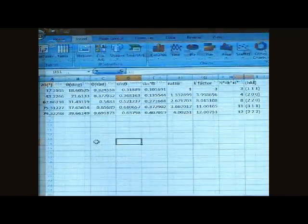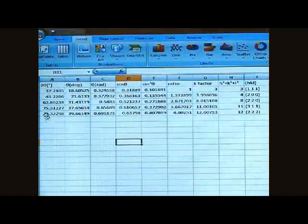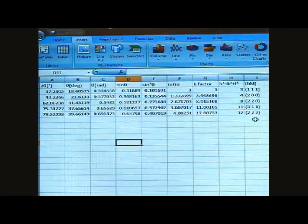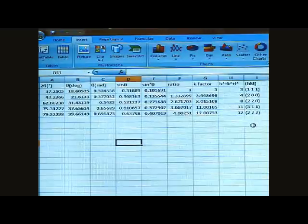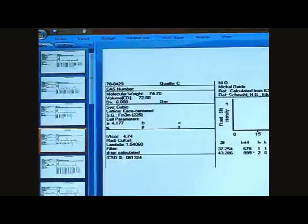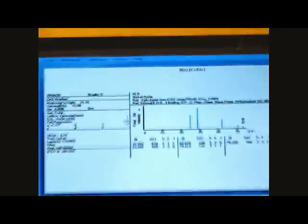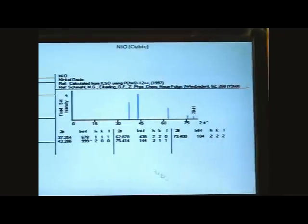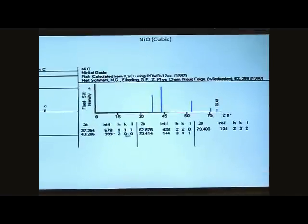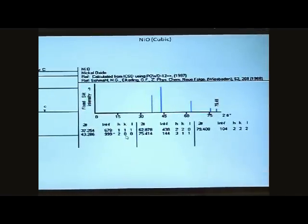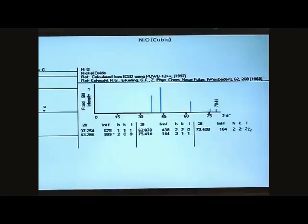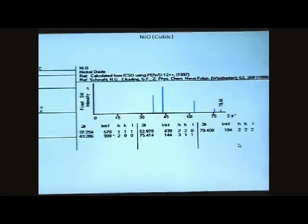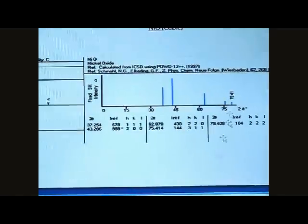After tabulating the obtained data, we get the HKL values as follows. Now we have to compare it with the ICDD PDF. Go to the JCPDS file for the NiO cubic structure. Here we got the HKL values, that is 111, 200, 220, 311, and 222. That is, it is in agreement with the experimental analysis.